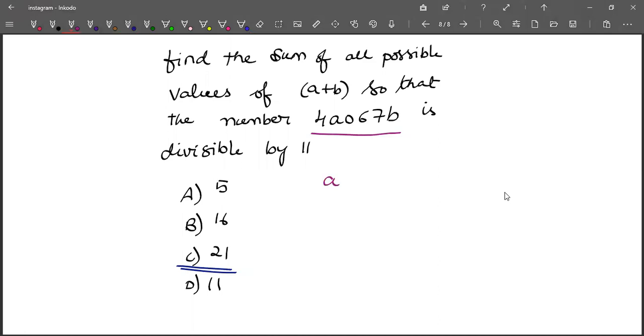So (a + 6 + b) minus (4 + 0 + 7), which equals a + b - 5, should be equal to 0 or 11 or 22 and so on.